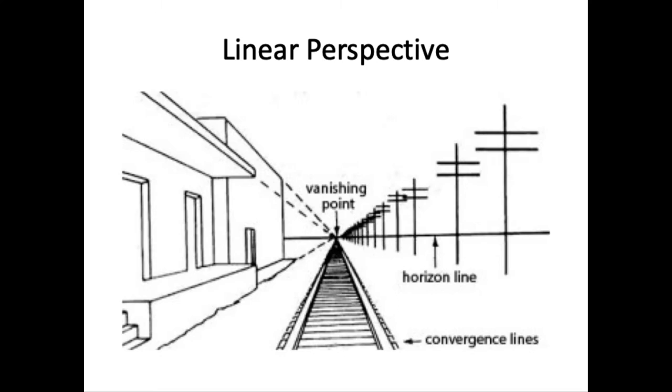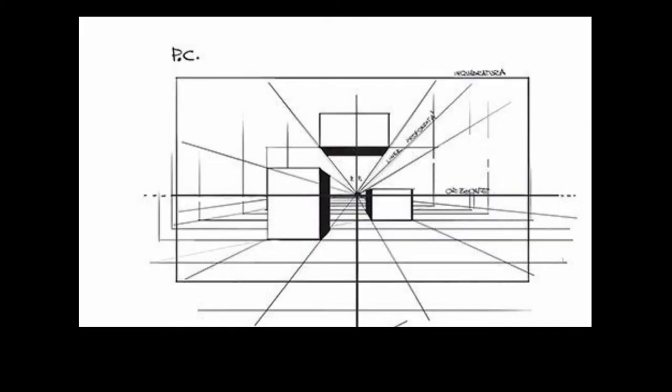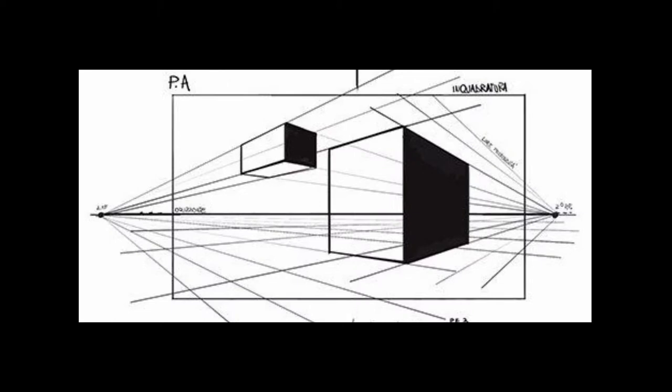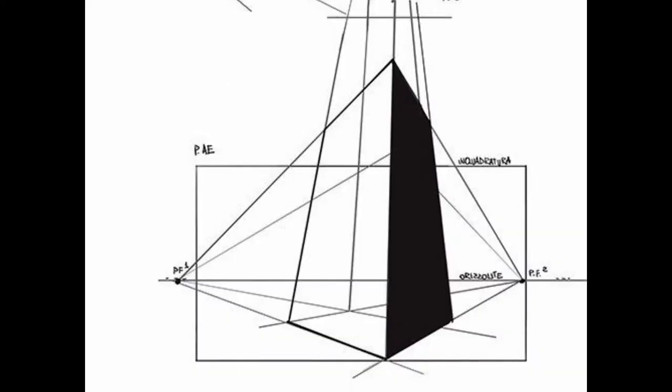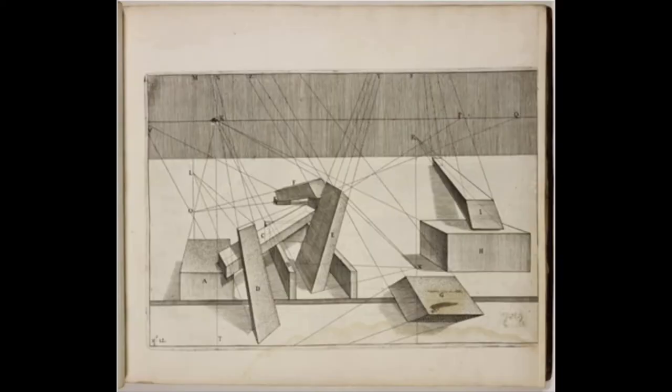There are some basic terms you should know. Horizon line, this is the same as your eye level. Vanishing point, you can have one, two, three, or more vanishing points in a perspective drawing.